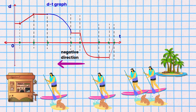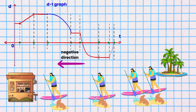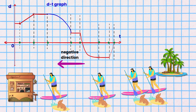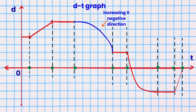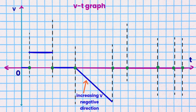Segment 4. Mole and Electron speed up in the reverse direction to a waterside cafe for lunch. They paddle board in the negative direction to the cafe at an increasing velocity. This is shown as a straight line with a negative slope in the VT graph below the time axis.